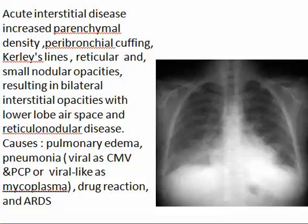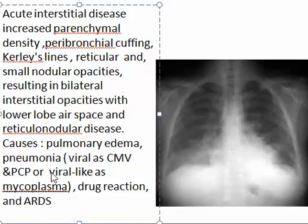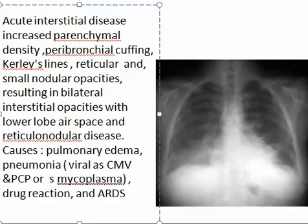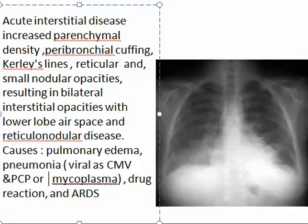Acute interstitial disease includes PCP, cytomegalovirus, mycoplasms, and septic emboli. Viral acute interstitial disease presents again with bilateral ground glass but with more reticulations, resulting in bilateral interstitial pattern, predominantly in the mid and lower zones.